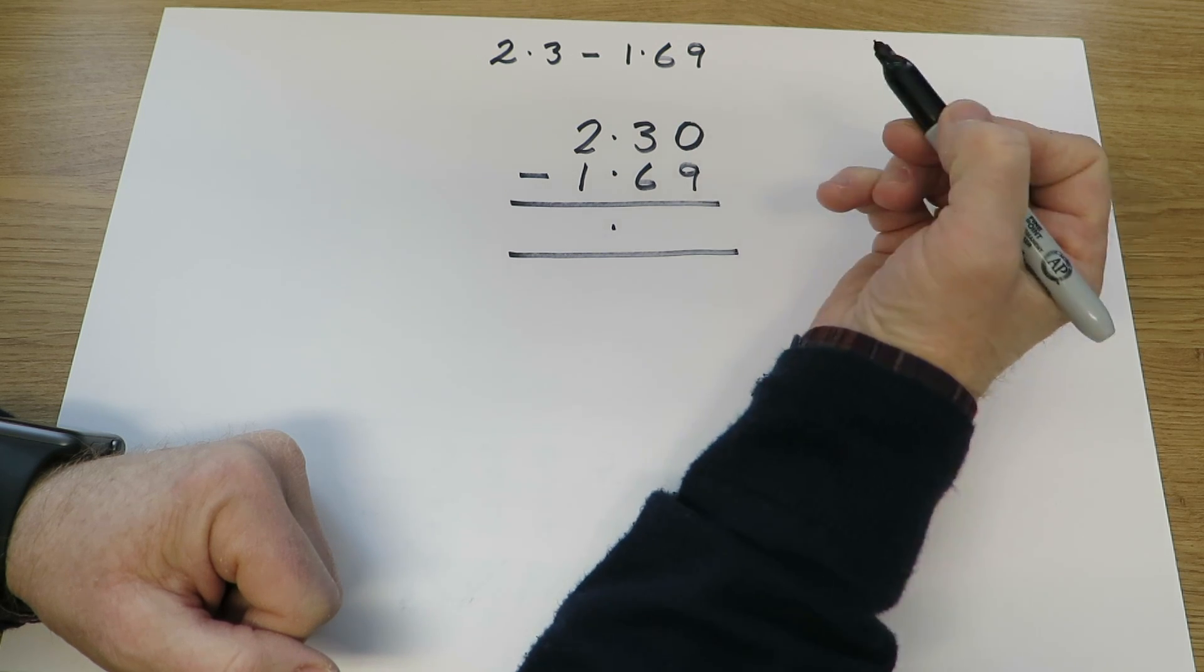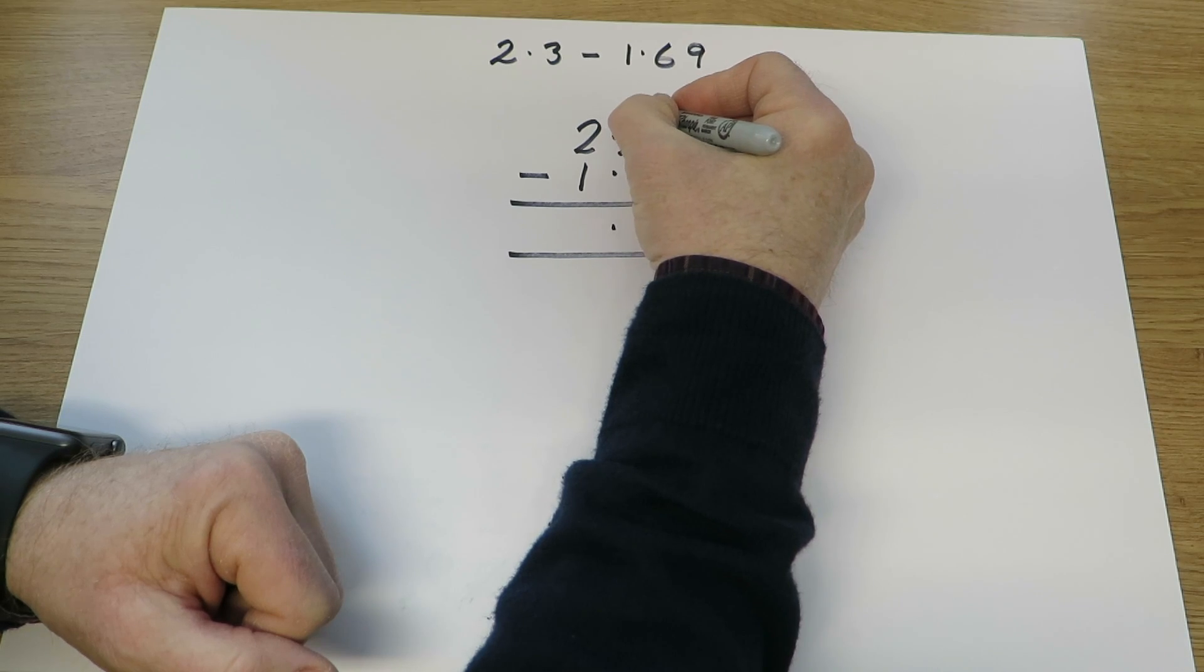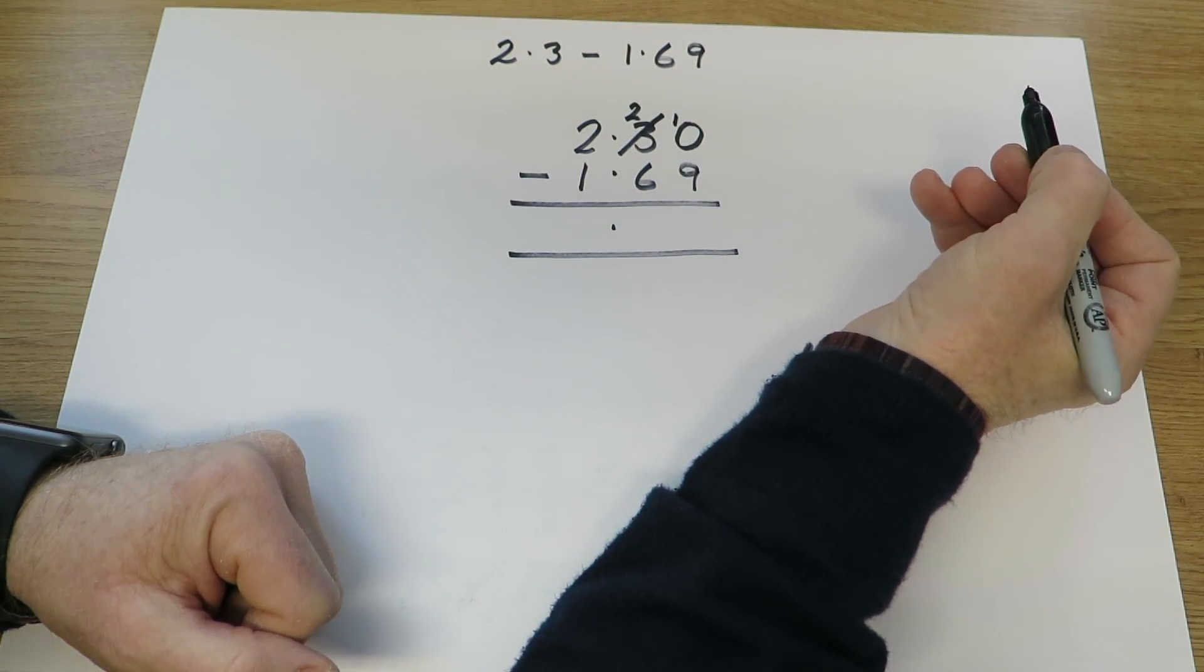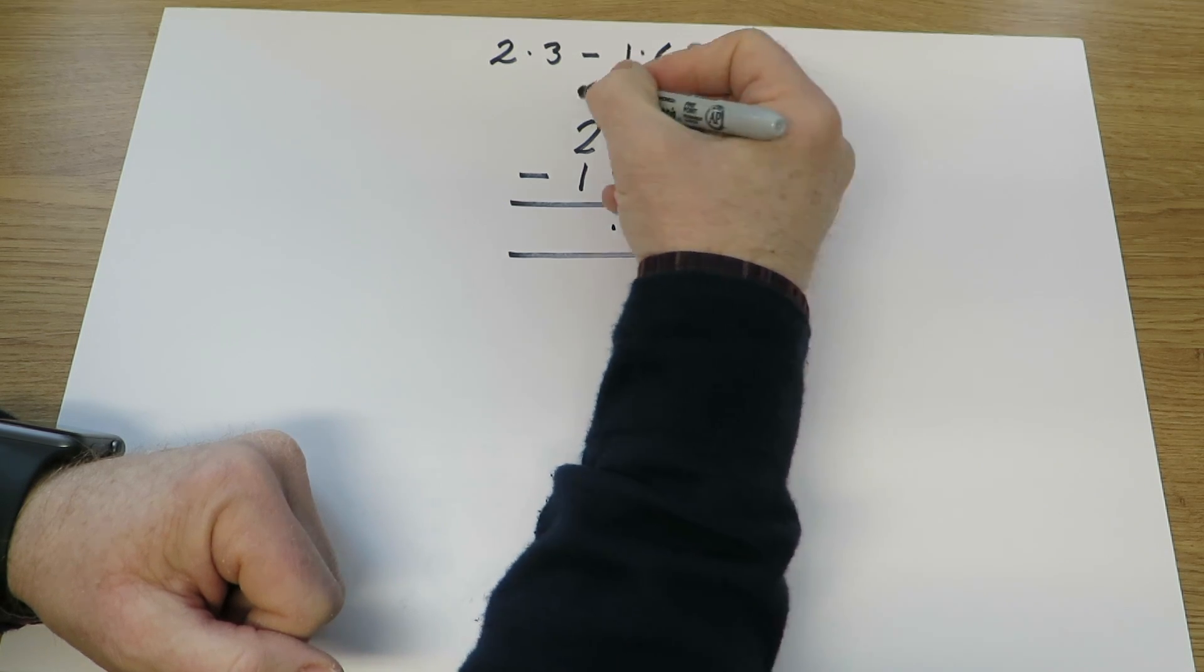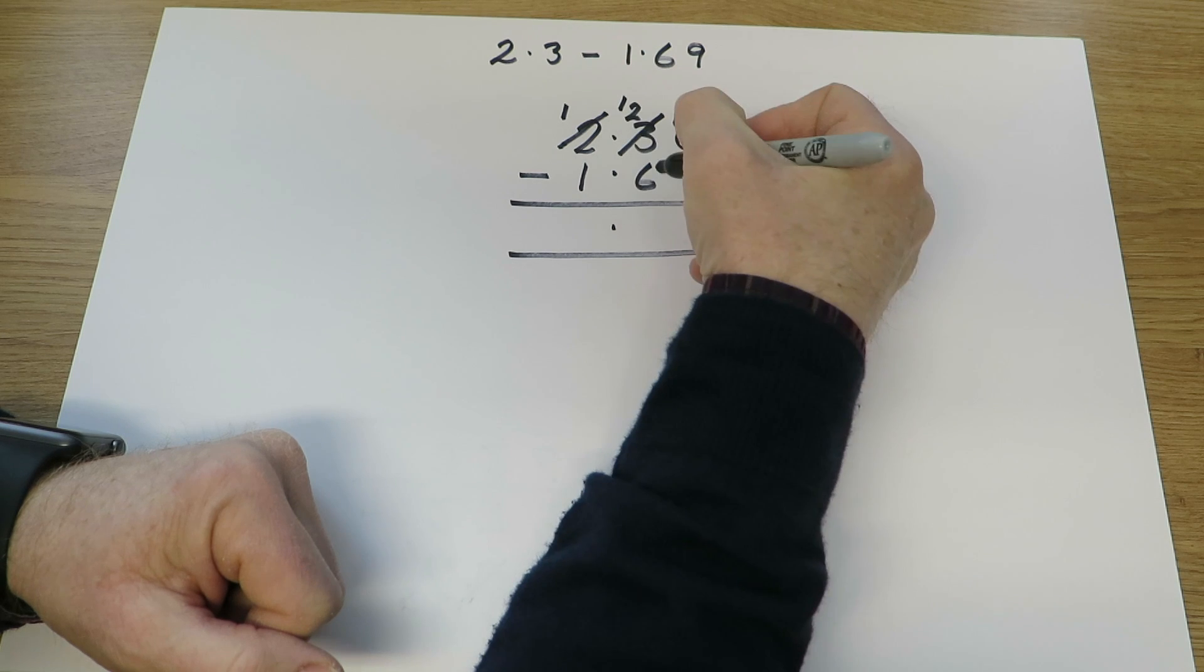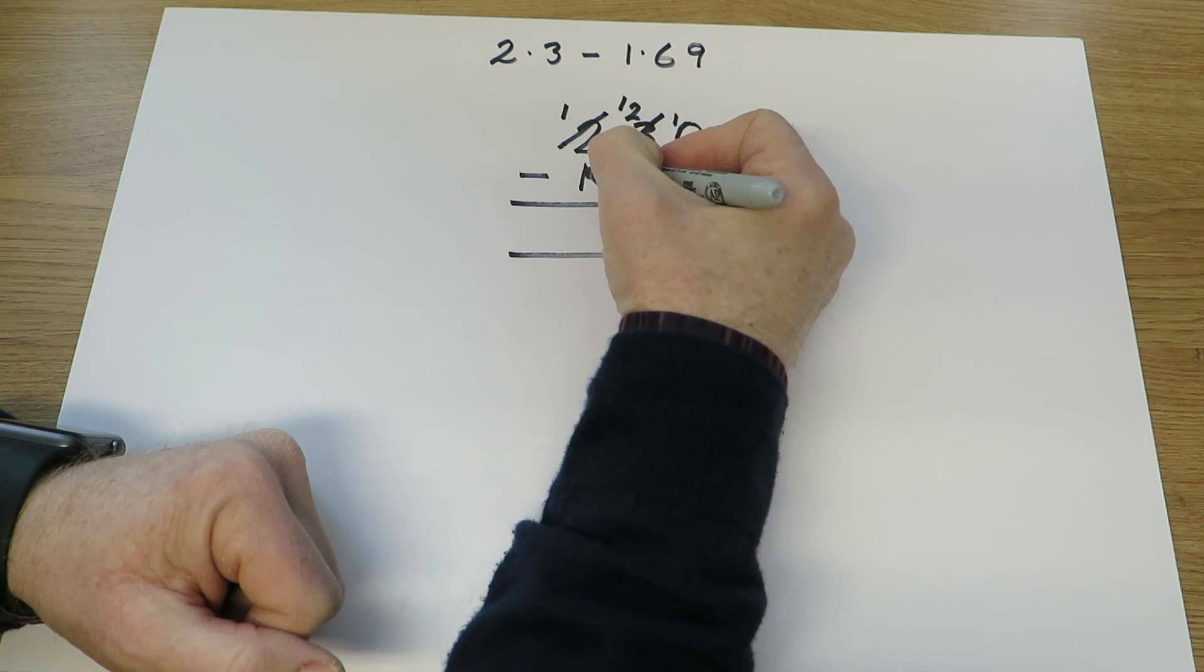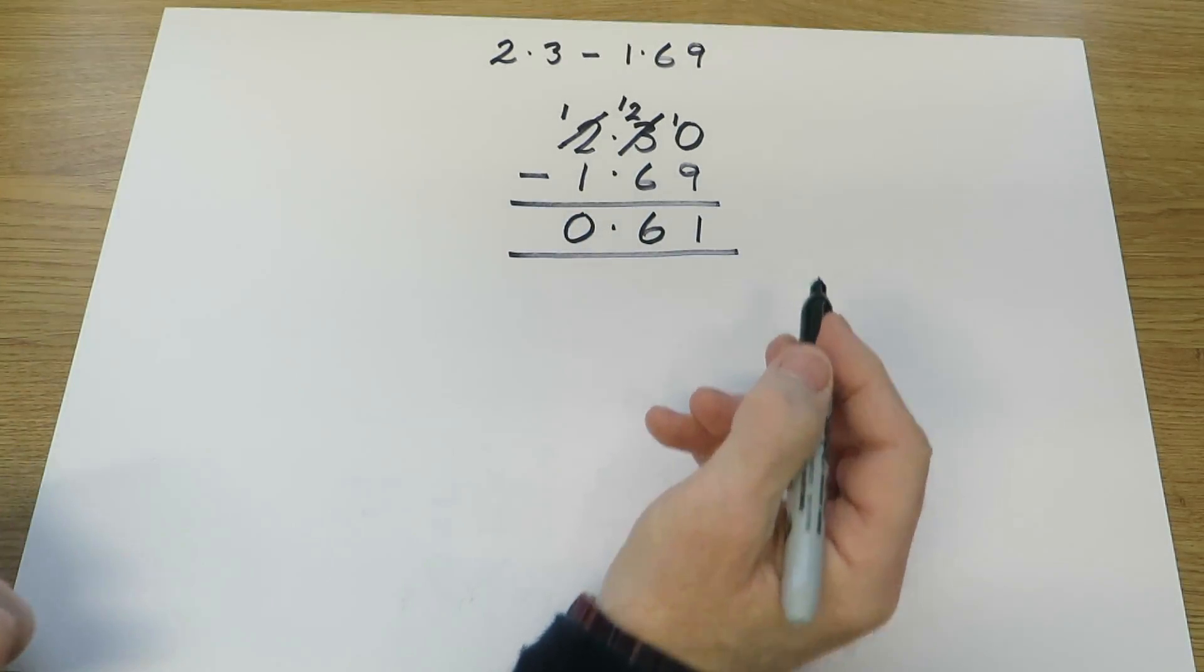0 hundredths take away 9 hundredths. We haven't got enough, so use one of the tenths. That leaves us with 2 tenths, gives us 10 hundredths. 10 take away 9 is 1. 2 tenths take away 6 tenths. We'll have to use a unit to make some extra tenths. 12 take away 6 is 6. And 1 unit take away 1 unit is a 0. Final answer, 0.61.